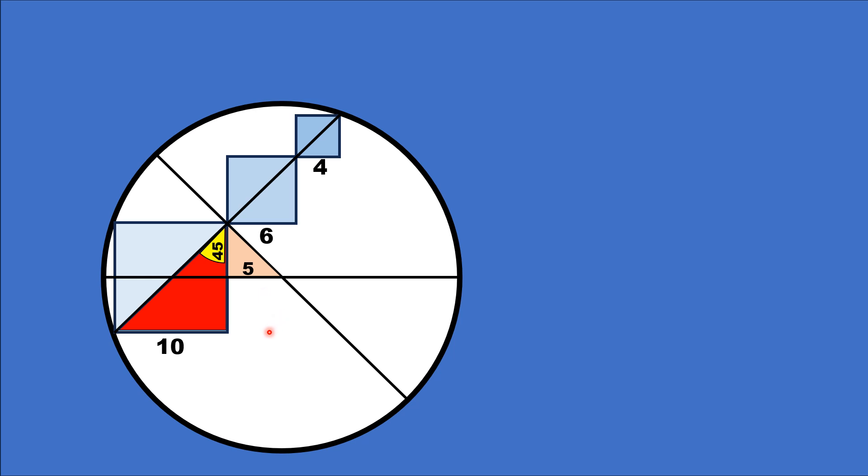Now we draw a line segment which is the radius of this circle, and we label this length as R. Let's consider this green shaded right triangle.